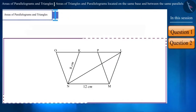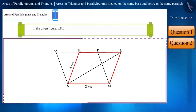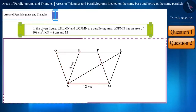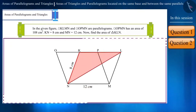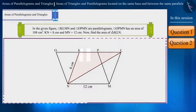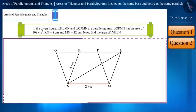Now let's look at another question. In the given figure, quadrilateral KLMN and quadrilateral OPMN are parallelograms. Quadrilateral OPMN has an area of 108 cm². The length of sides KN and MN is 8 cm and 12 cm respectively. Find the area of triangle KLN. Pause the video and try to find the answer yourself. In the given figure, parallelogram KLMN and OPMN have the same base — side MN — and they both lie between the same parallel lines OL and MN.